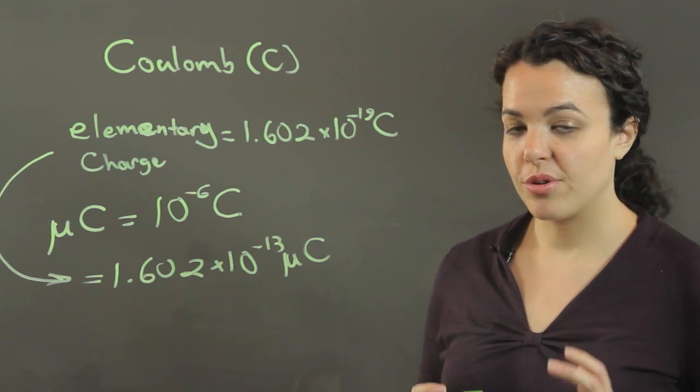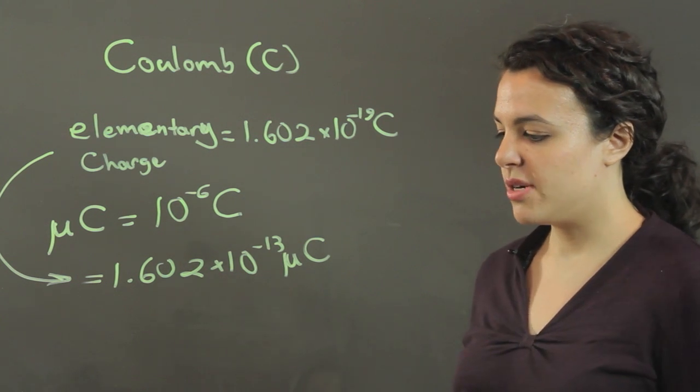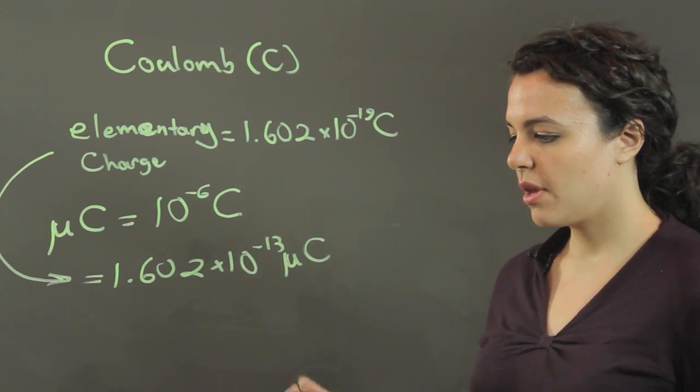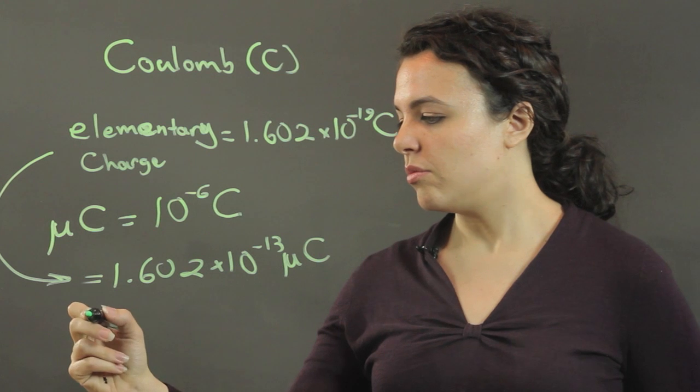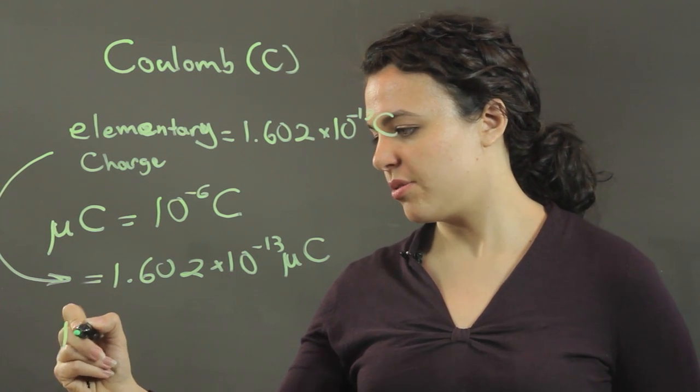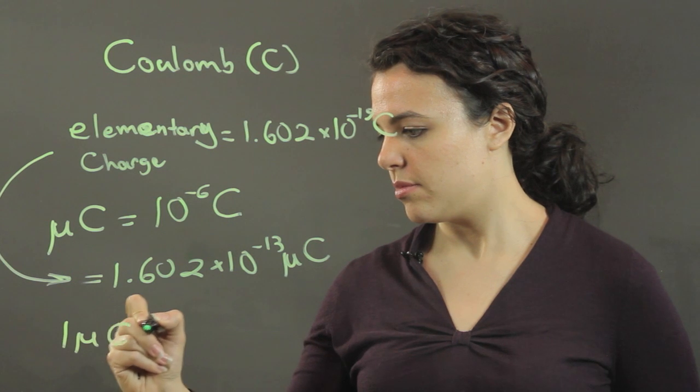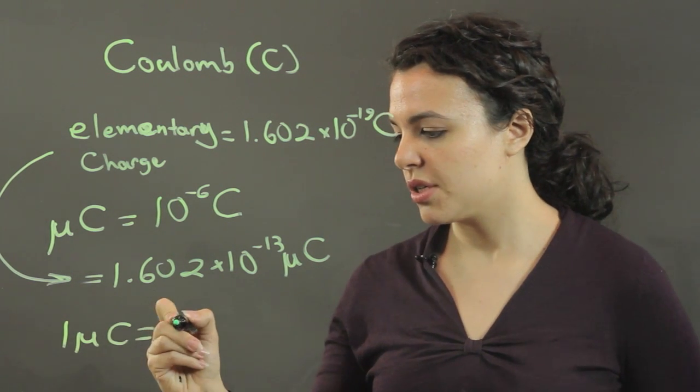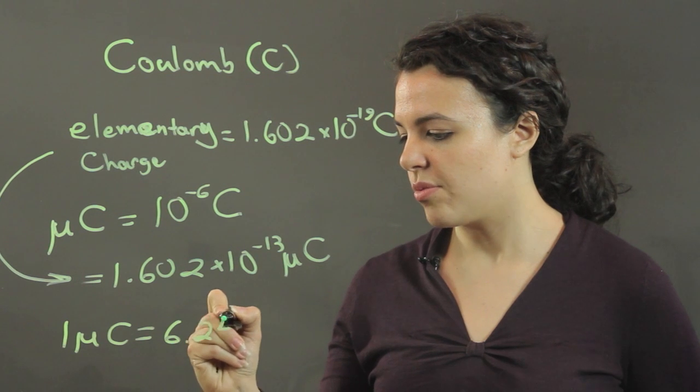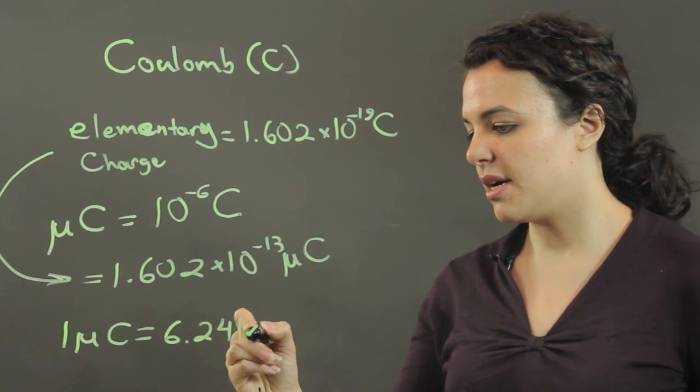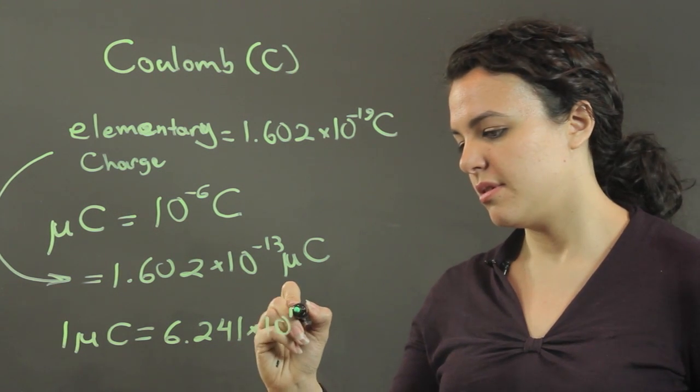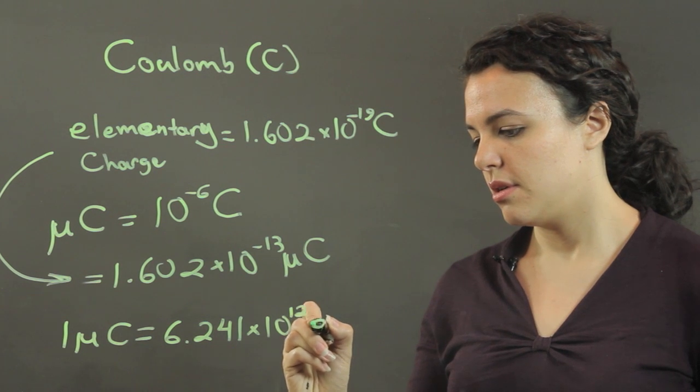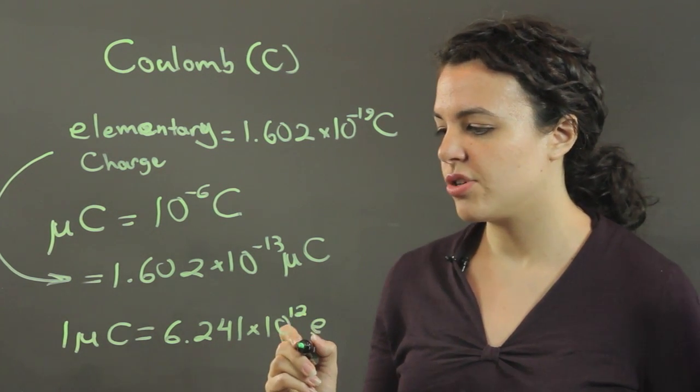Now, if you want to go from microcoulombs to the elementary charge, then we have that 1 microcoulomb is equal to 6.241 times 10 to the 12th, and lowercase e for the elementary charge.